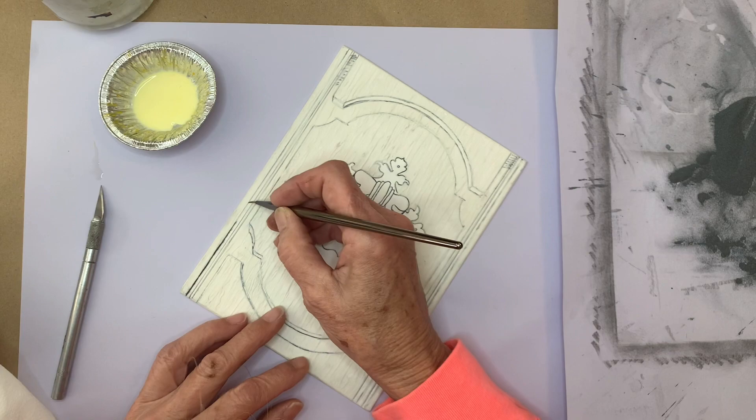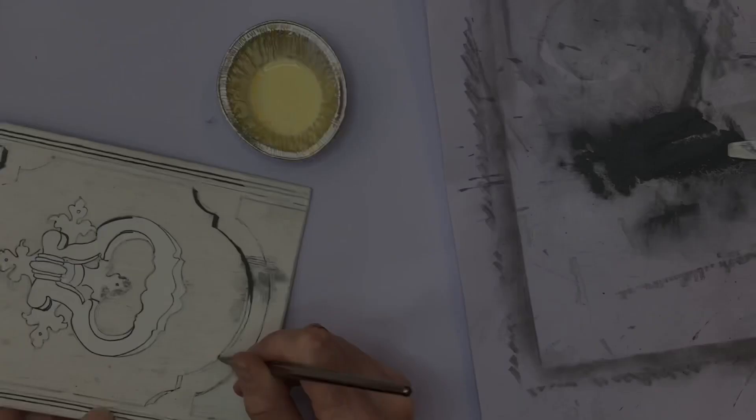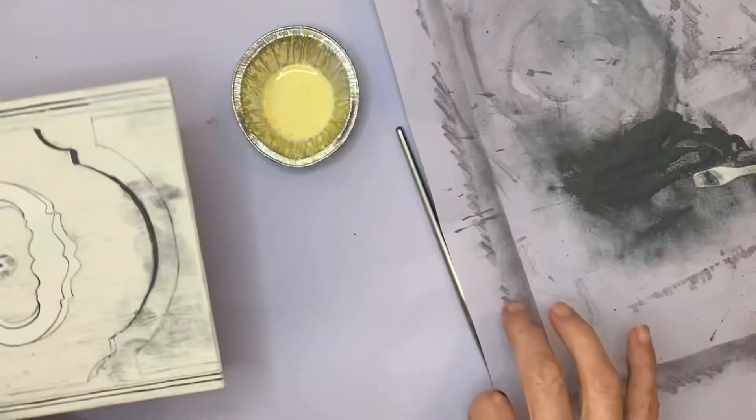The carborundum will catch more ink than the modeling paste creating darker areas when printed. In this case I'm using it for the shadows.